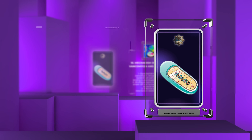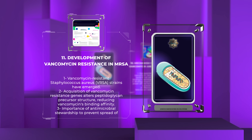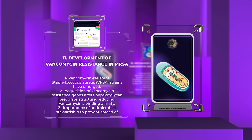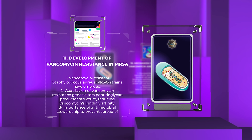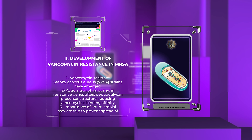Vancomycin-resistant Staphylococcus aureus strains have emerged due to the acquisition of vancomycin-resistant genes, such as the VANA gene. This gene alters the structure of the peptidoglycan precursor, reducing vancomycin's binding affinity and rendering it ineffective. The emergence of VRSA highlights the importance of appropriate antimicrobial stewardship to prevent the spread of resistant bacteria.